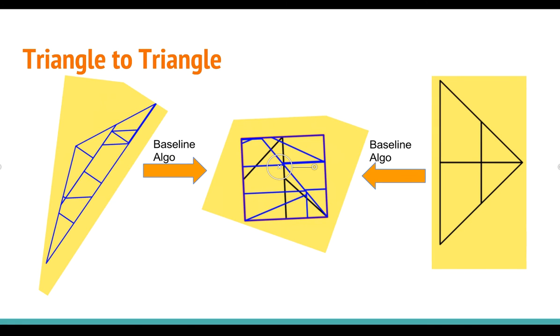Now, I'm going to talk about triangle-to-triangle transformation. This is very easy if you recall the baseline algorithm. So first, we have a source triangle. We'll cut that to a rectangle and then to a square.